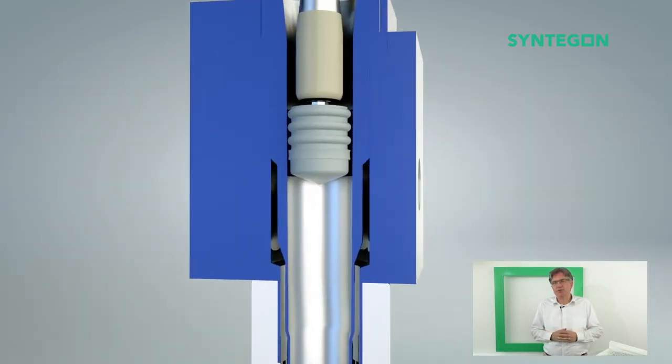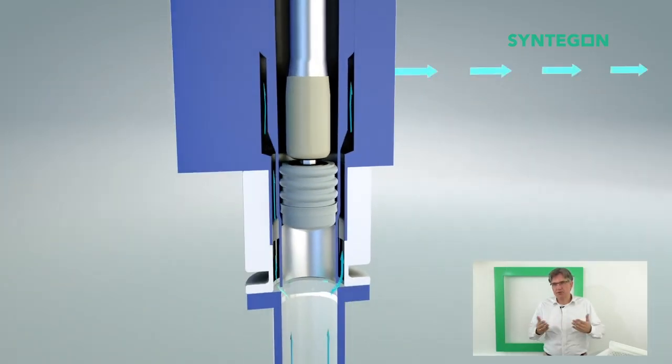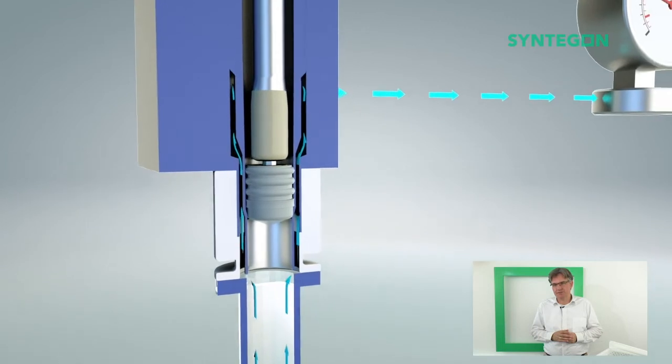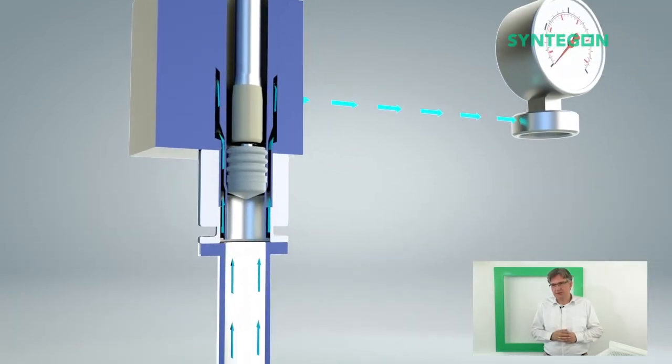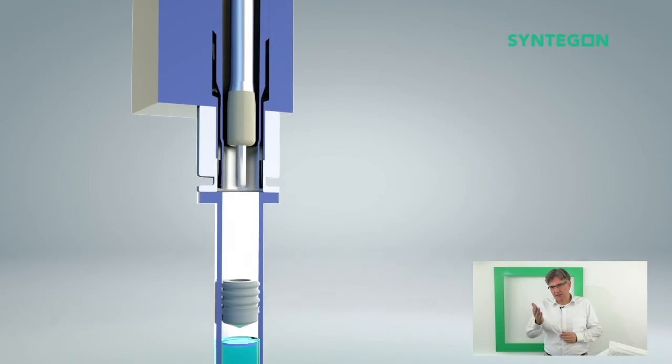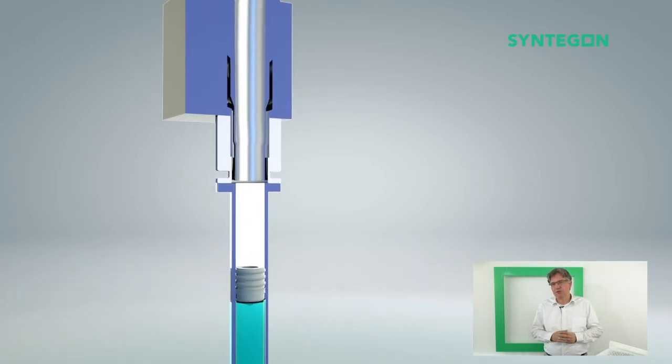And due to the vacuum, the stopper will go down on the fill level. Here you see the vacuum and how the stopper is going down on the fill level.